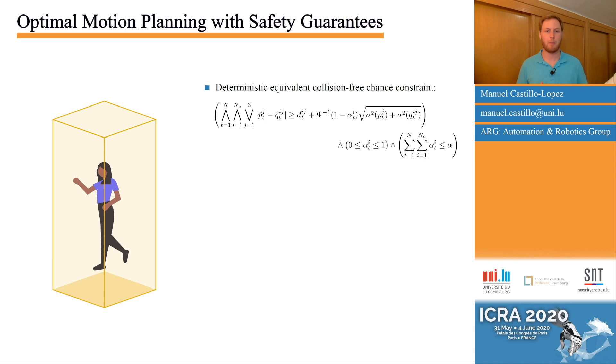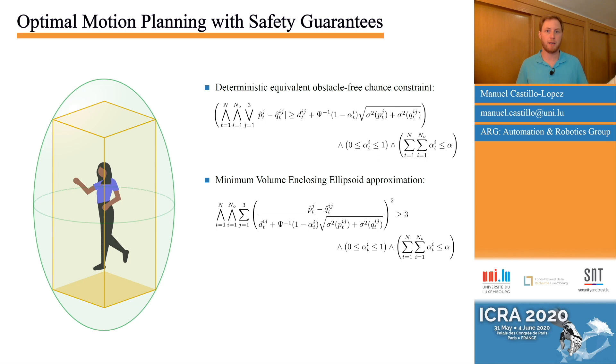However, we still need to rely on combinatorial optimization to solve the optimal control problem, so we approximate it by its minimum volume enclosing ellipsoid, which for a bounding box has a closed-form solution. This way, we avoided surface linearization and combinatorial optimization while preserving the original safety guarantees.